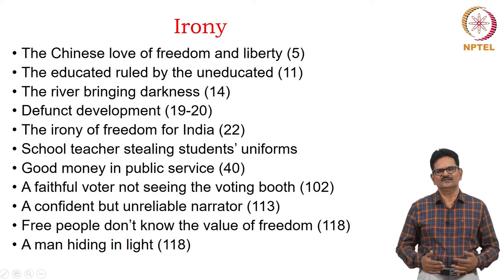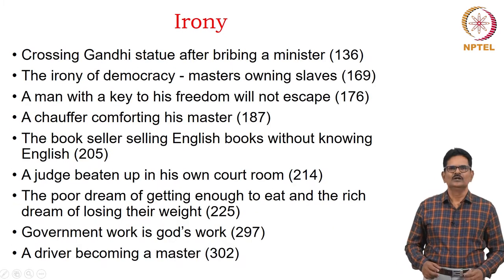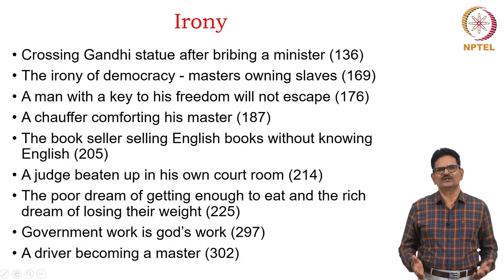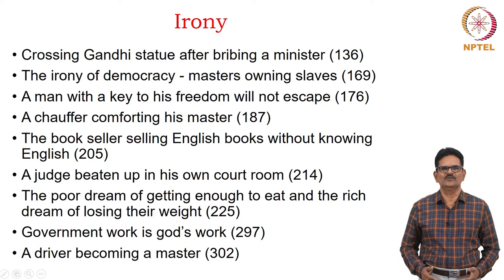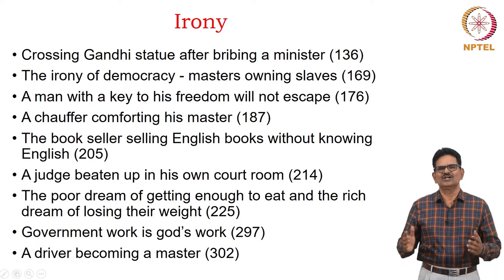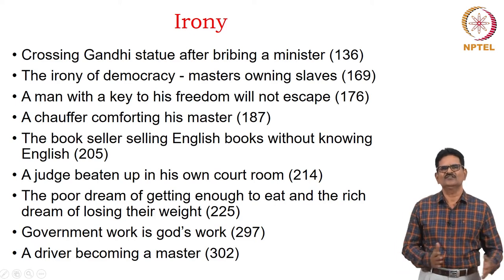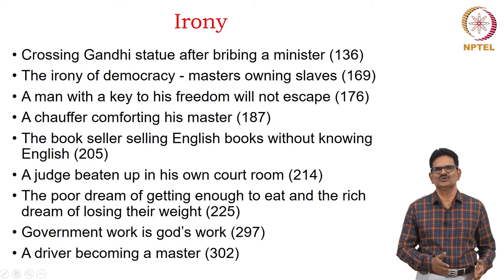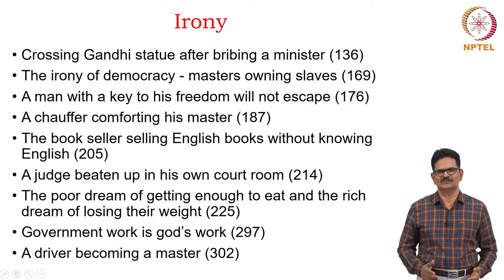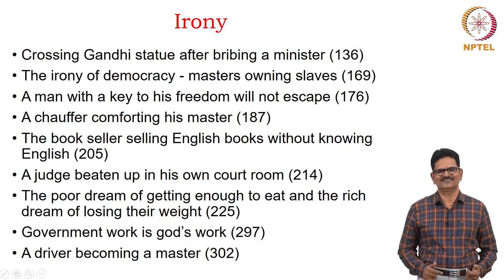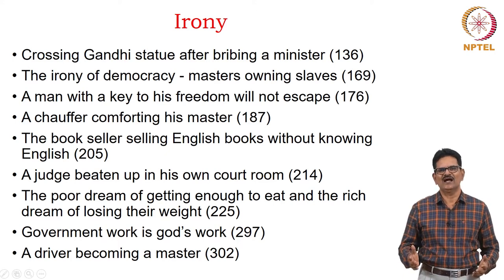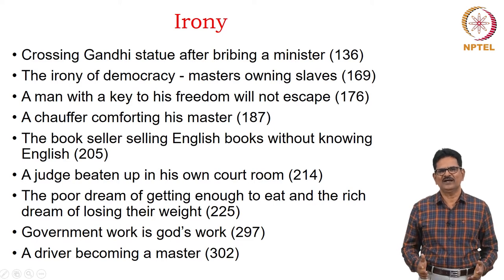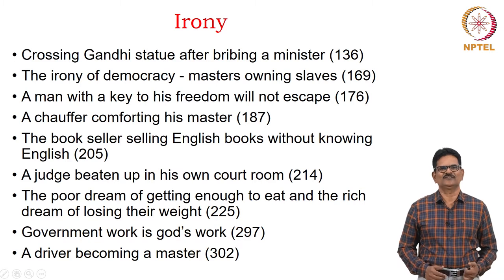We will see some more cases of irony in the novel. For example, Ashok and Mukesh cross the Gandhi statue after bribing a minister. Mahatma Gandhi stood for truth and non-violence, but here we have the statue reminding people that there is some truth, while all untruthful activities are taking place around it.